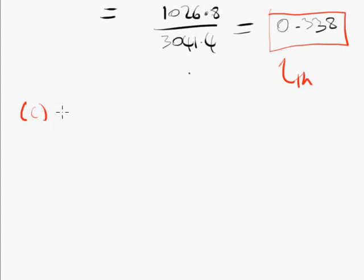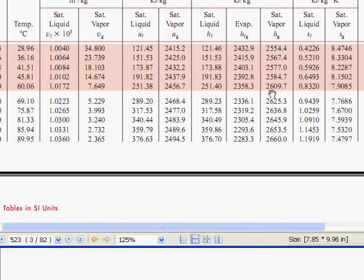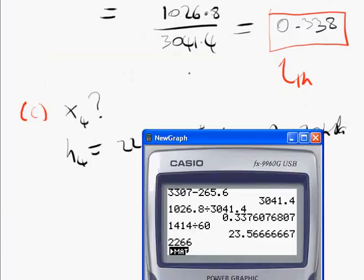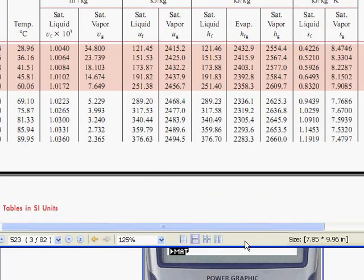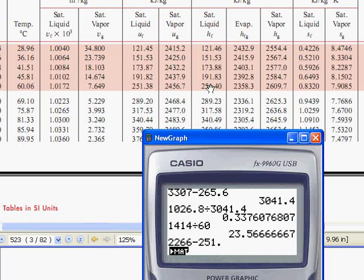So we know h4, so we can use that. h4 is 2266 kilojoules per kilogram. And p4 is 20 kilopascals. So we have two properties. We should be able to find anything else. Go to the tables. 20 kilopascals. Our enthalpy is between hf and hg. So it is saturated. So the quality is 2266 minus 251.4, x4 divided by 2358.3 minus 251.4, which gives us 0.954.